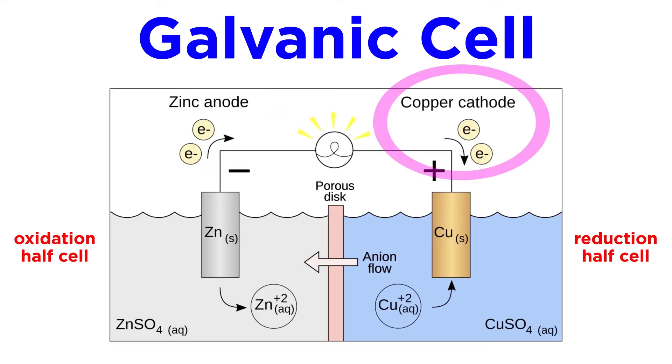On the right side, called the cathode, the reduction takes place as ions in the solution gain electrons and deposit onto the electrode. In a common example of a galvanic cell, we have zinc on the anode and copper on the cathode.